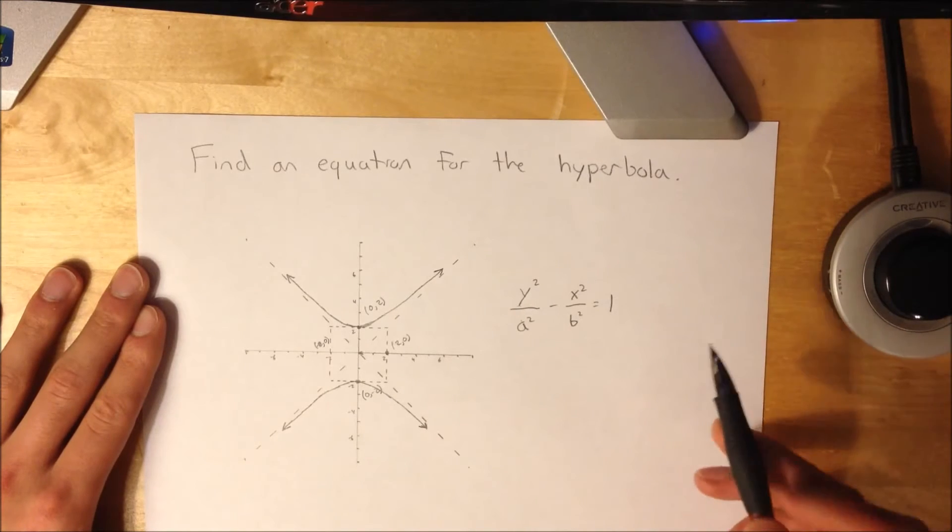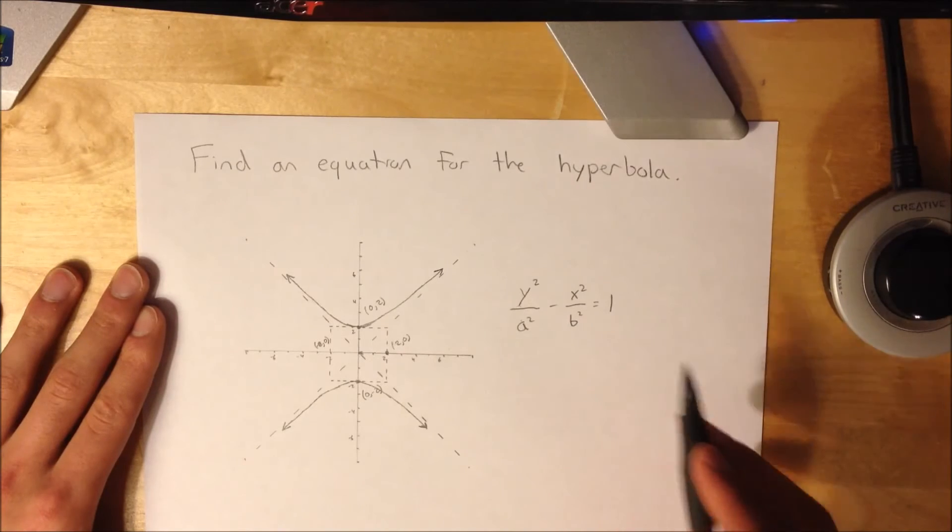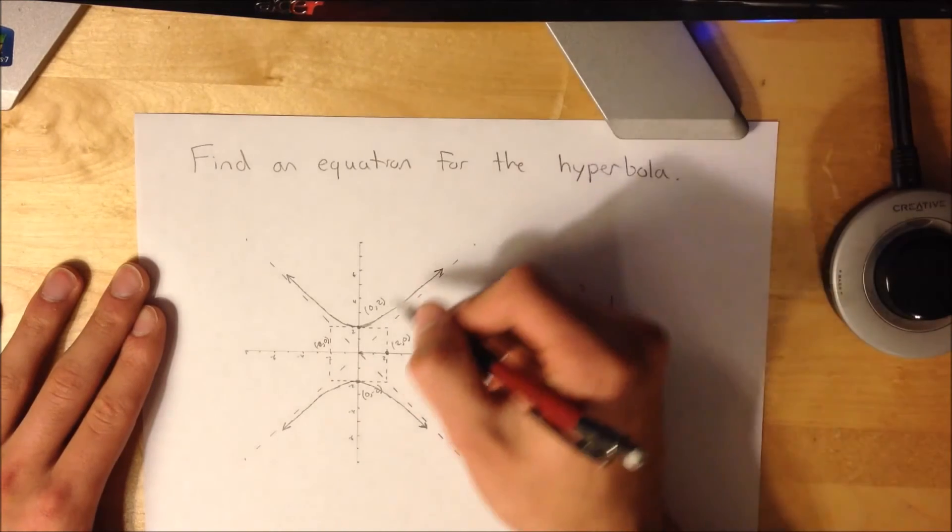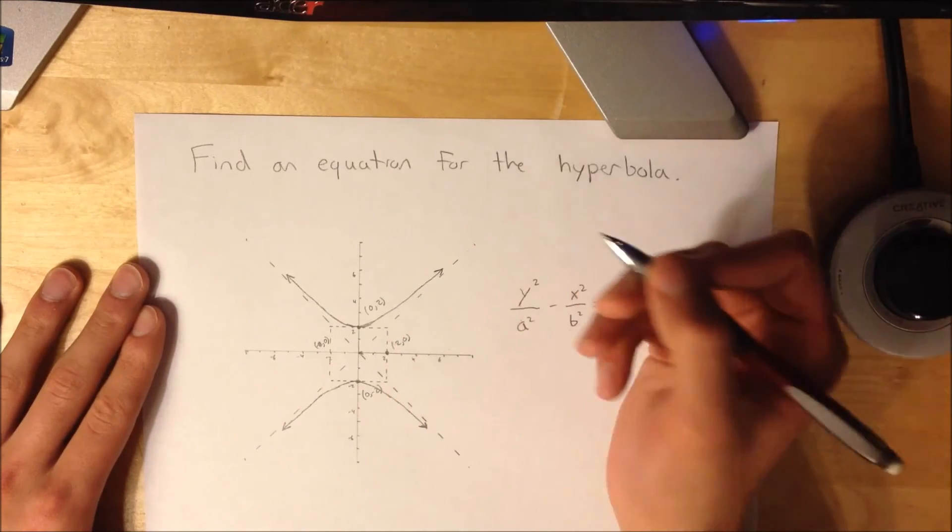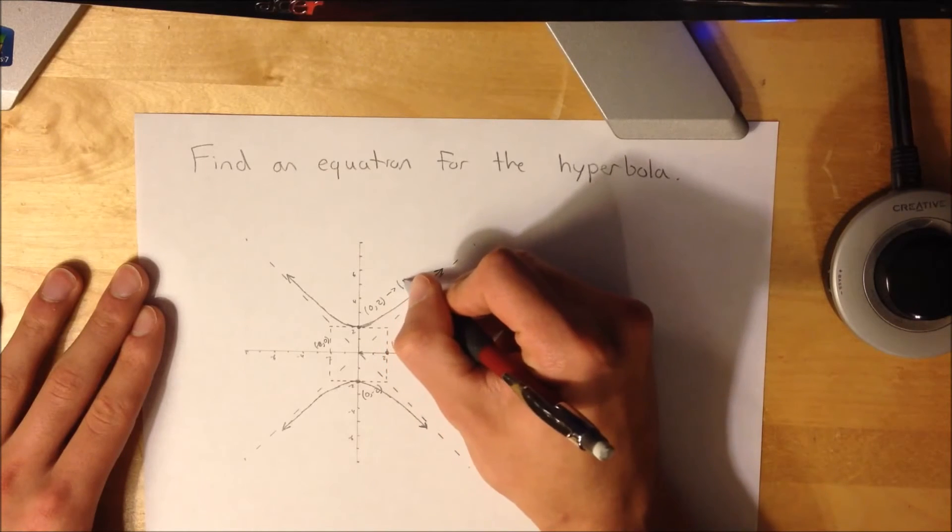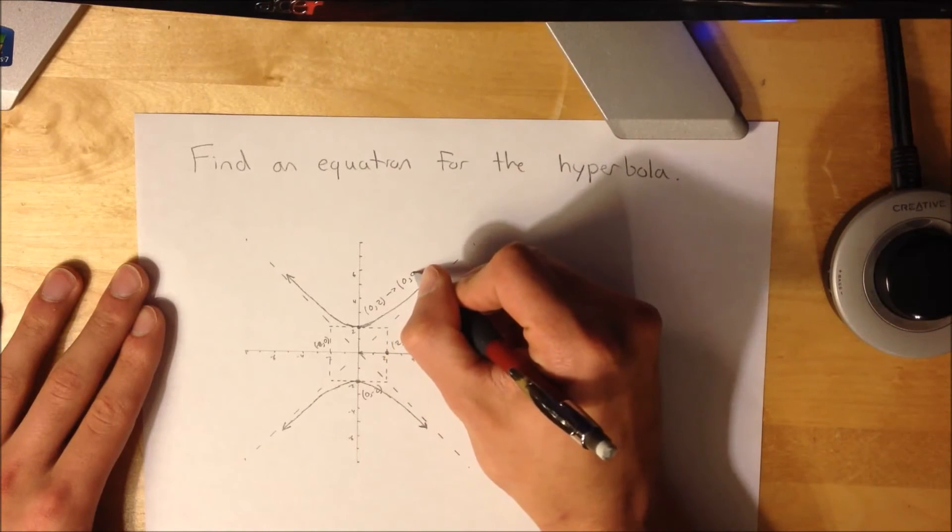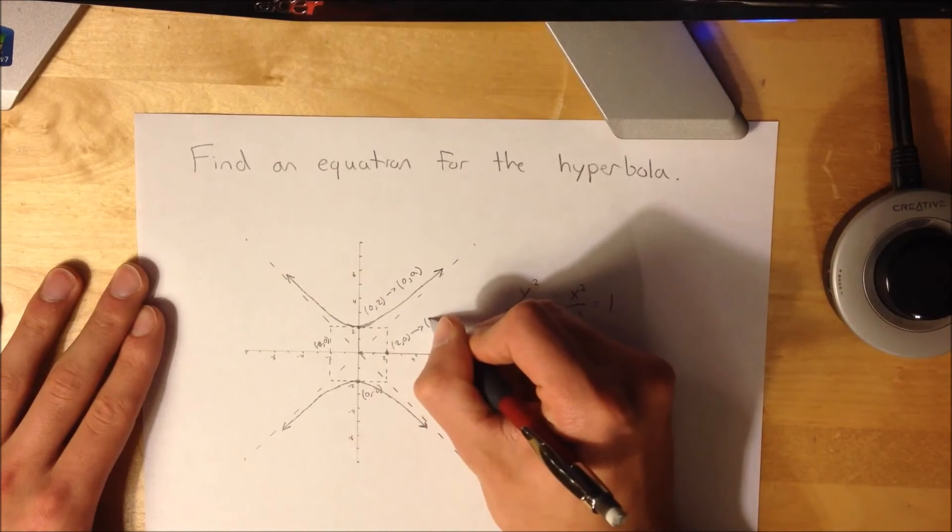All you have to do is find the a and b values and square them. The nice thing about this is these points already give you your a and b values. So this vertex is actually equivalent to (0,a), and that would be your a value, and this value right here is equivalent to (b,0).